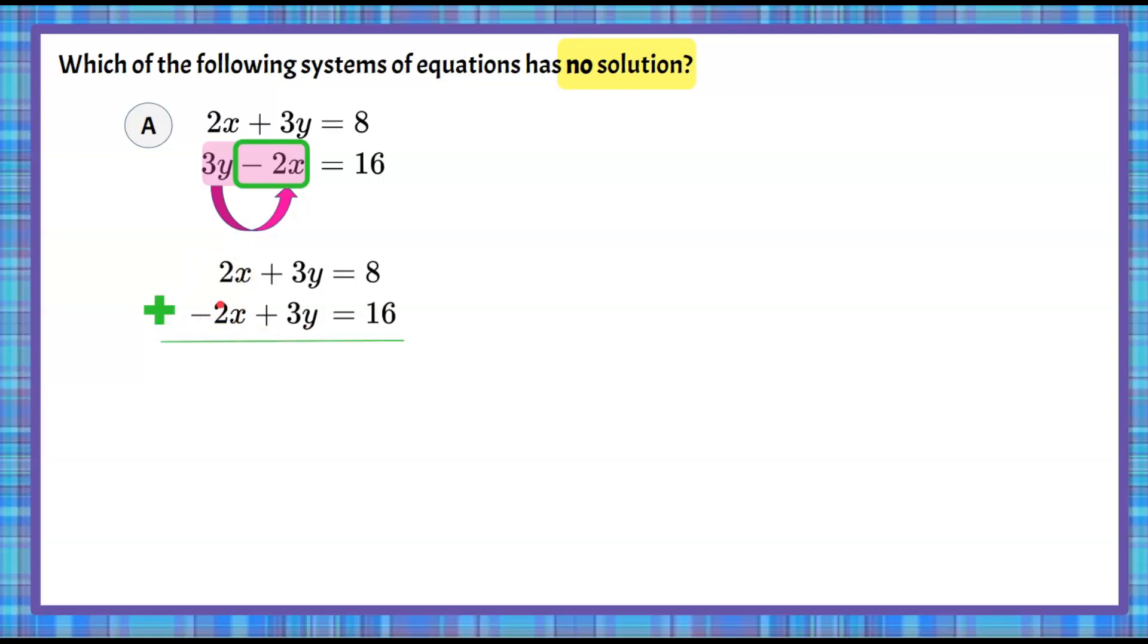If your coefficients are opposite, you want to add. If they're the same, you want to subtract. So I could subtract because these are the same, but I prefer to add. So when I add, these are opposites, that's 0, a 0 pair. 3y plus 3y is 6y, and 8 plus 16 is 24. Divide both sides by 6, and we get that y is equal to 4.